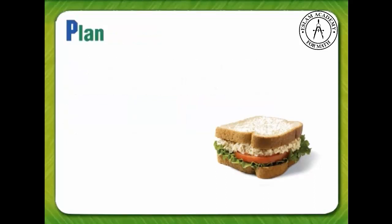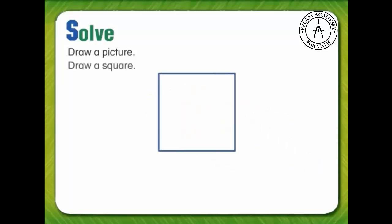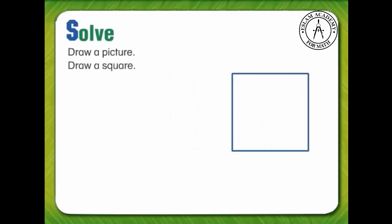Now we need a plan. How will we solve the problem? We can draw a picture. We are ready to solve the problem by drawing a picture. The sandwich is shaped like a square, so we'll draw a square to show the sandwich.